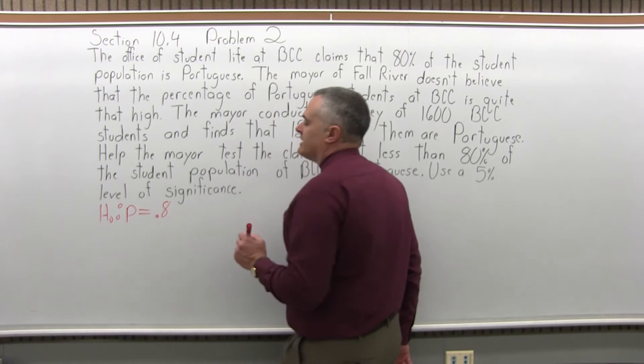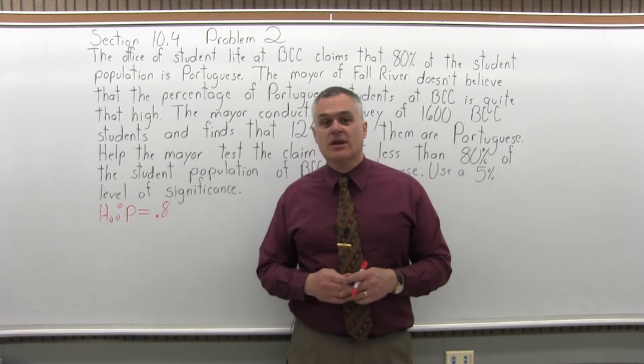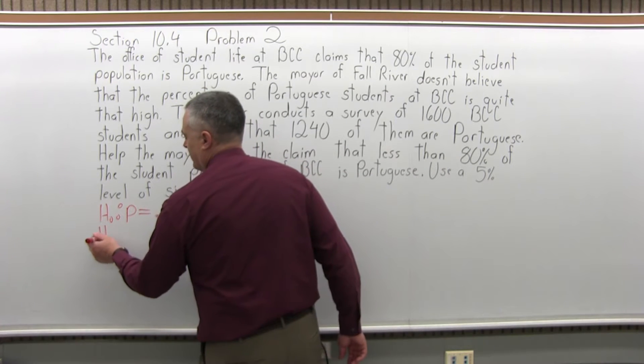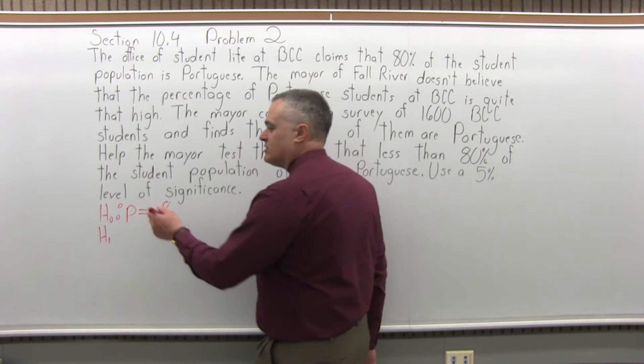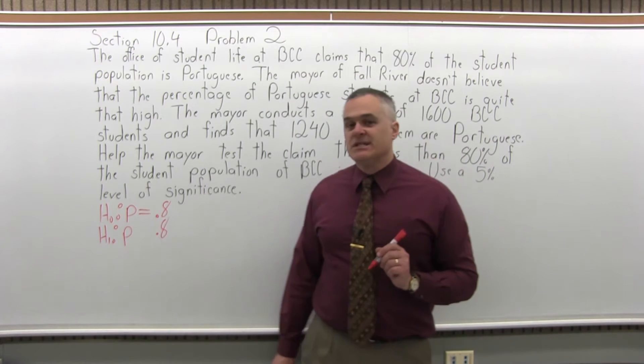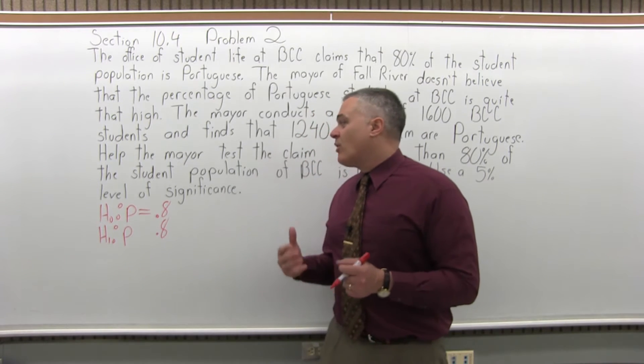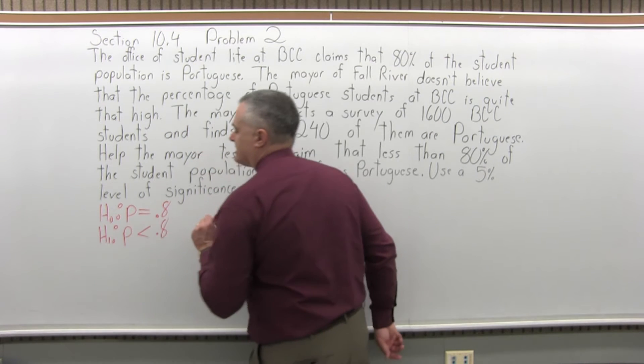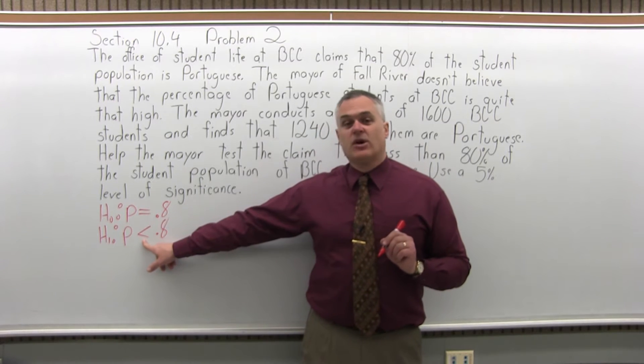The 80% that we're testing, you have to write it as a decimal, 0.8 or 0.80. So now the next step is to write the alternate hypothesis, capital H with a subscript of 1 for alternate hypothesis. You put the colon again. You put the same P for proportion, the same number. But now you'll use a different symbol. It will either be less than, greater than, or not equal to. What are we testing here? We want to test that it's less than 80%. So the less than symbol is like that. Just less than, not less than or equal to. If it had an or equal to, it would have to go in the null hypothesis. So that's the second step.